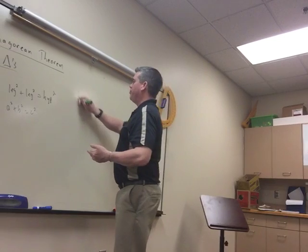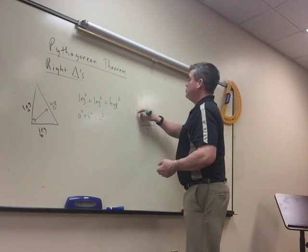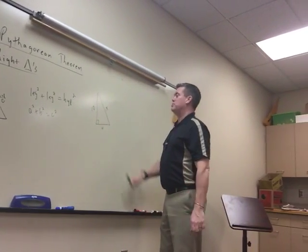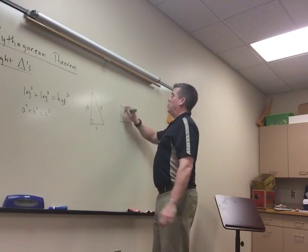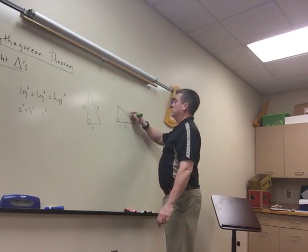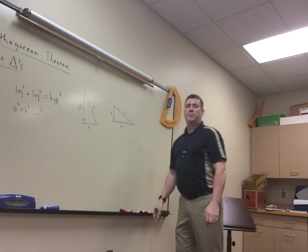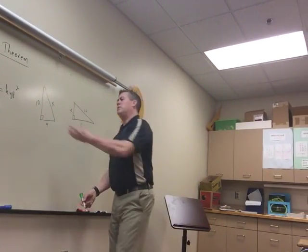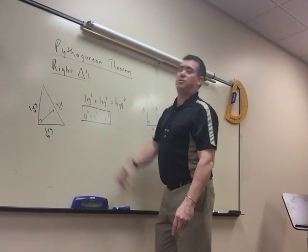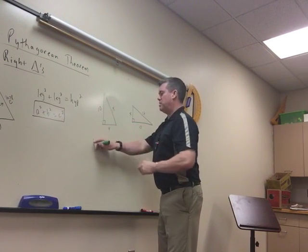One of two things is going to happen: you're either going to have two legs given and you're looking for the hypotenuse, or you'll have a leg and a hypotenuse and you're looking for the other leg. You can always just plug them into a² + b² = c² if you don't remember the shortcuts.